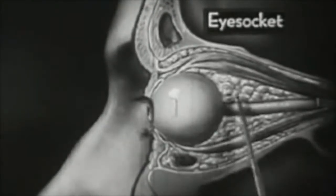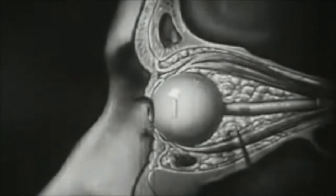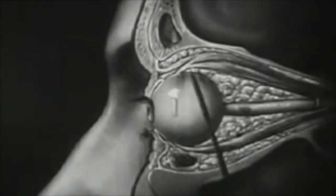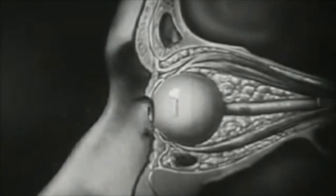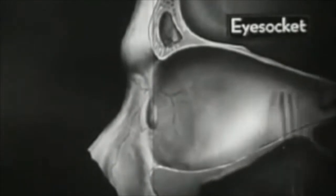Once again we see the fatty cushion which protects it on all sides. Note this white stalk which is the optic nerve, and also these muscles which move the eyeball. This is the empty eye socket.